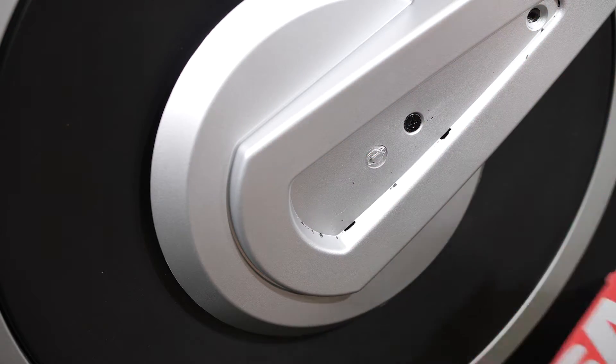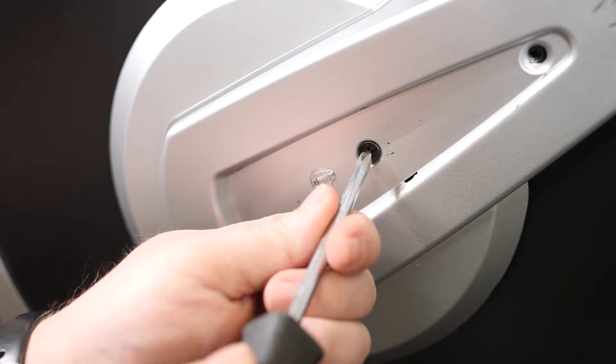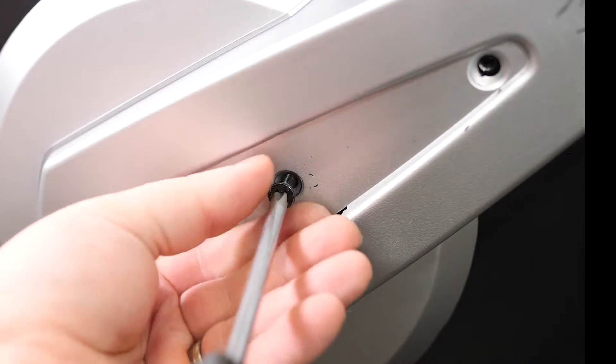Next, with a standard Phillips head screwdriver, remove the two screws holding the shield cover to the machine. Then remove the shield cover.